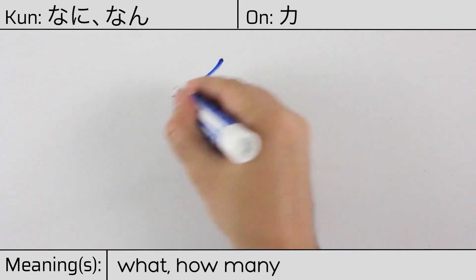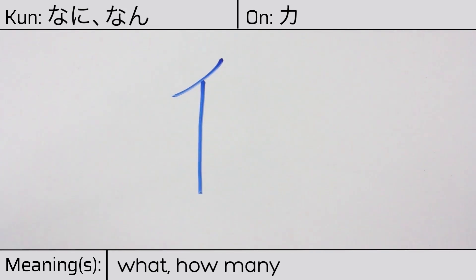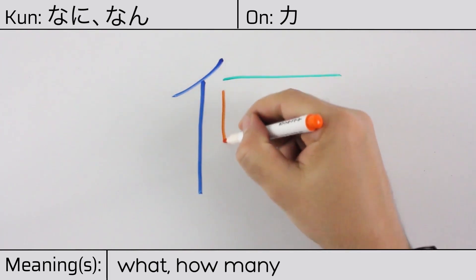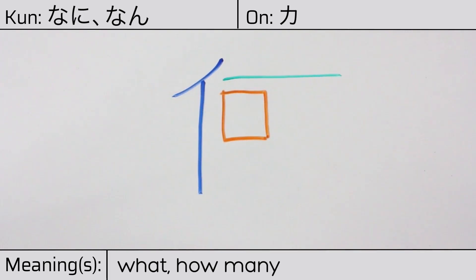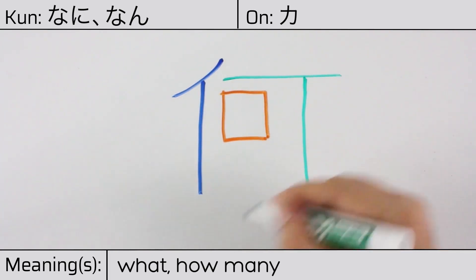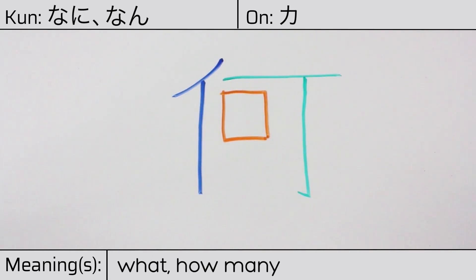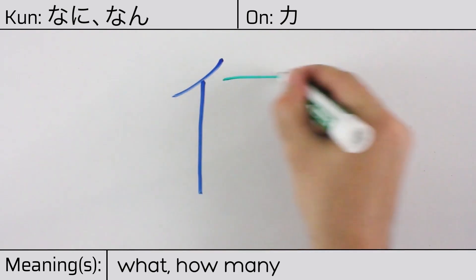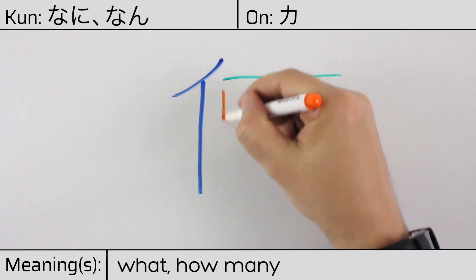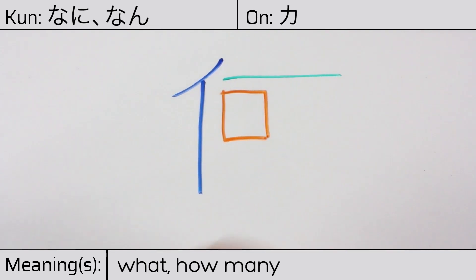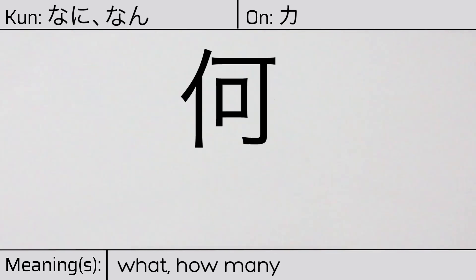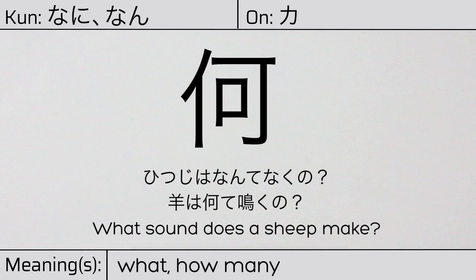The radicals are: the stylized person or hito known as ninben, ichi or wan, the mouth radical, and a hook radical. The whole right side of this character means can or passable. You can remember this kanji by the following hint: a good learner can ask questions. Our example sentence is: Shitsuji wa nan te naku no? — What sound does the sheep make?